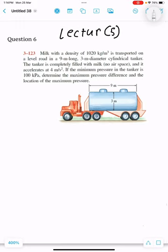Acceleration at 4 meter per second squared. If the minimum pressure in the tanker is 100 kilopascal, determine the maximum pressure difference and the location of the maximum pressure.